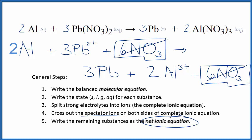What's left, that's the net ionic equation for Al plus Pb(NO3)2. I'll clean it up and write the states. We'll have our net ionic equation.